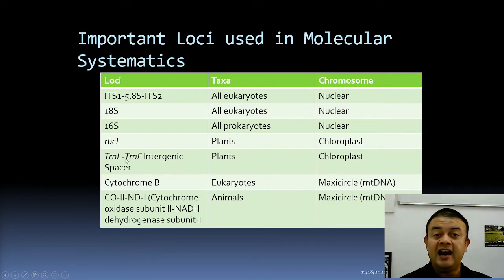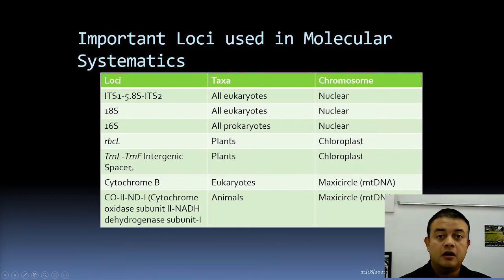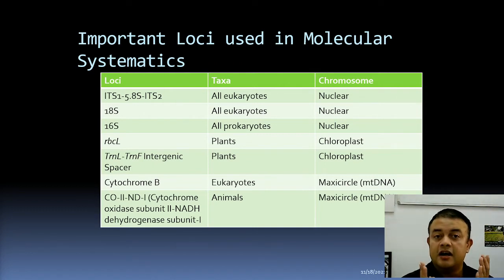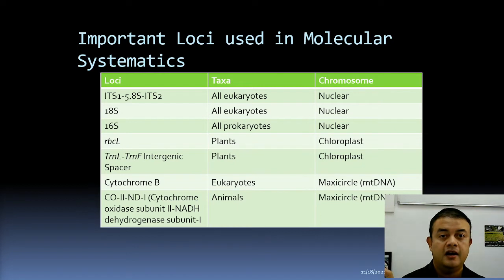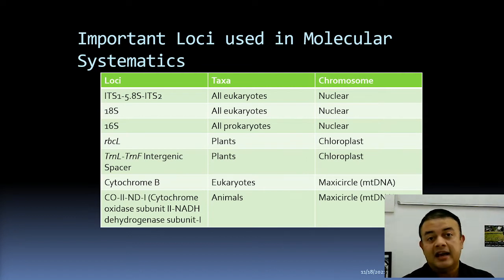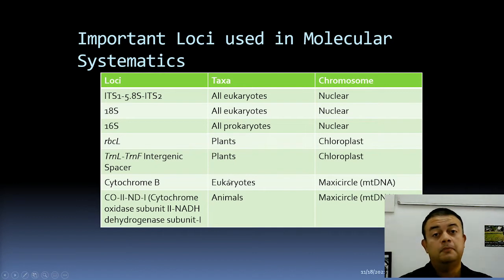Another commonly used chloroplast locus is the trnL–F intergenic spacer. trnL and trnF code for transfer RNAs carrying leucine amino acids. Between trnL and trnF there is an intergenic spacer region, and that spacer is used as a locus for both phylogenetic reconstruction and DNA barcoding. This region is also chloroplast-encoded, not nuclear.